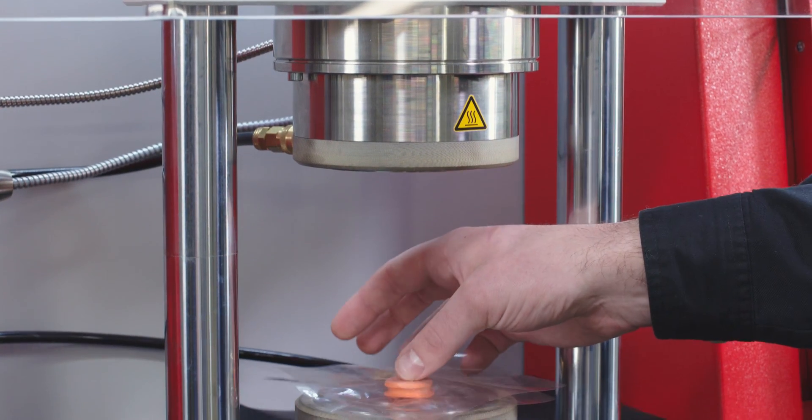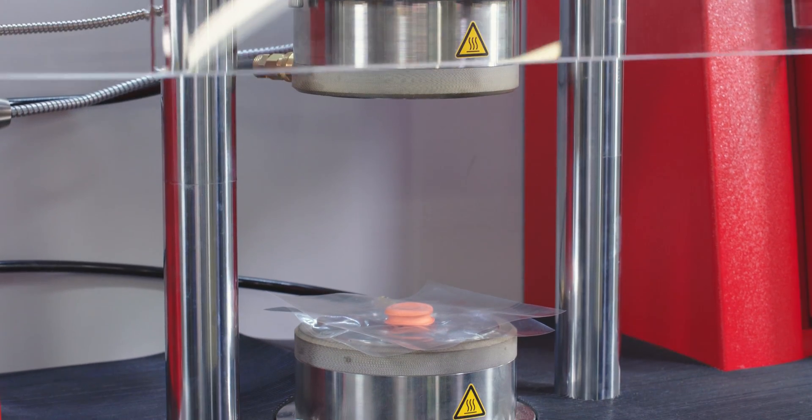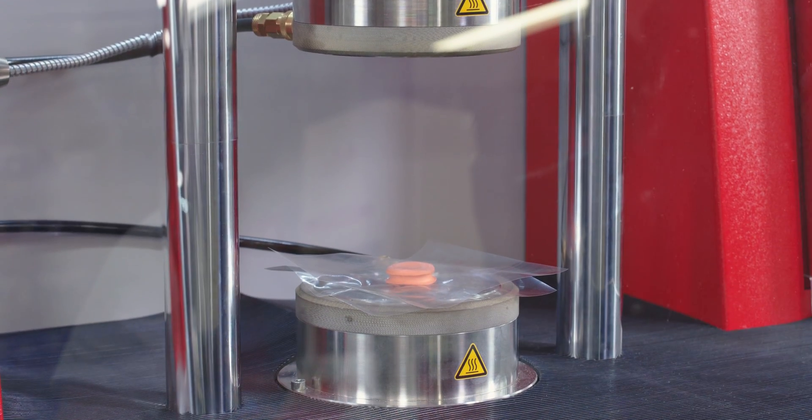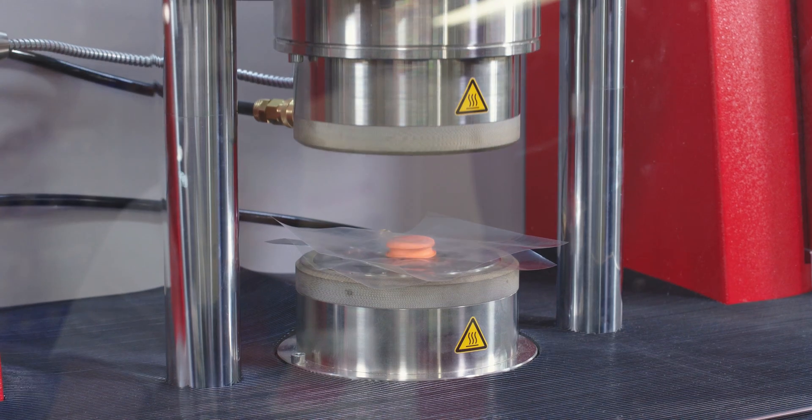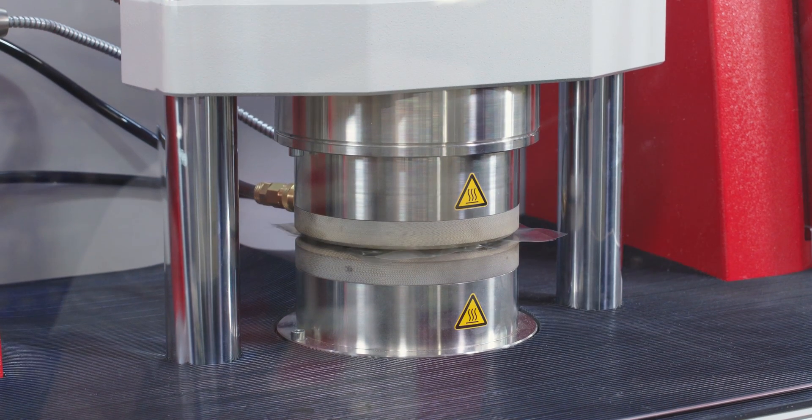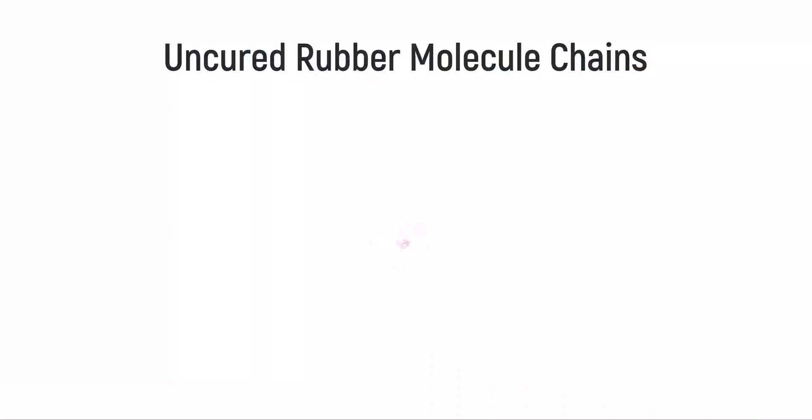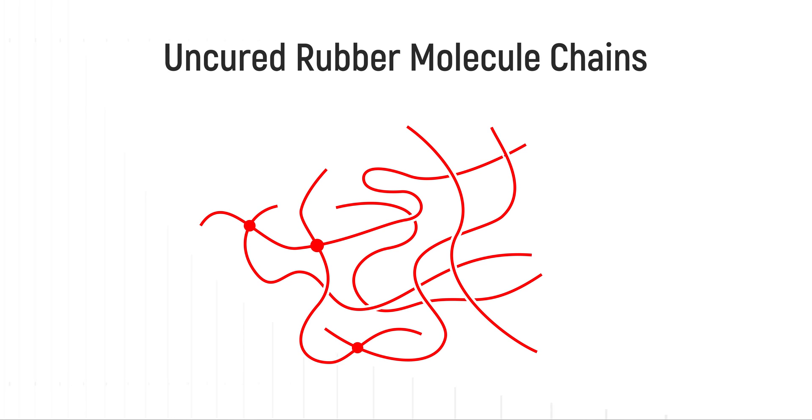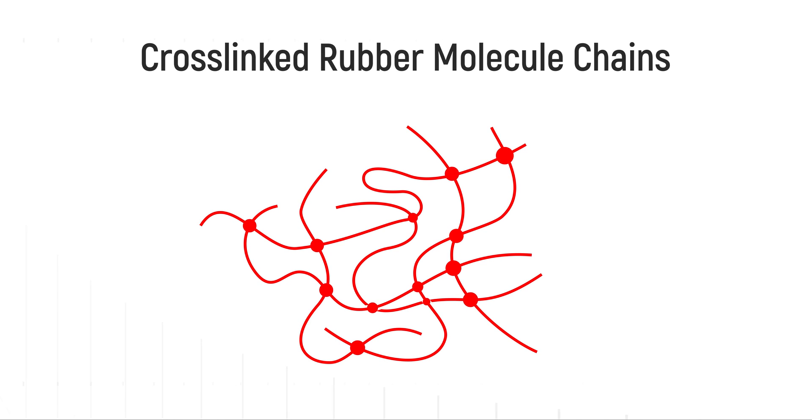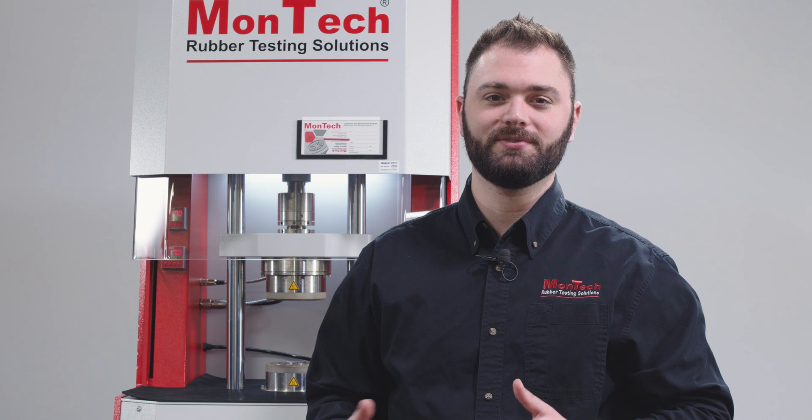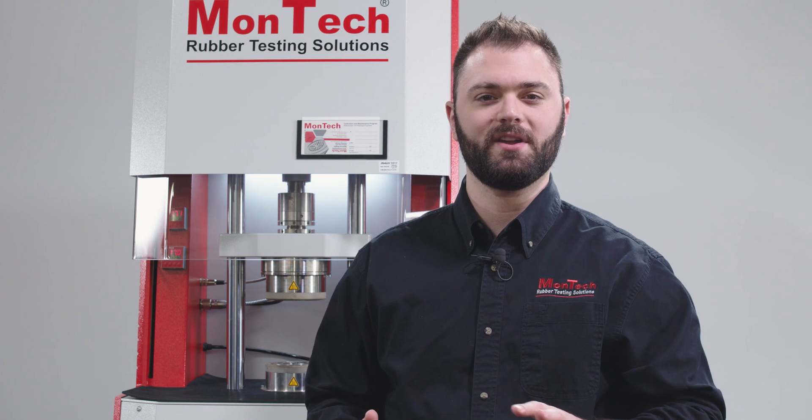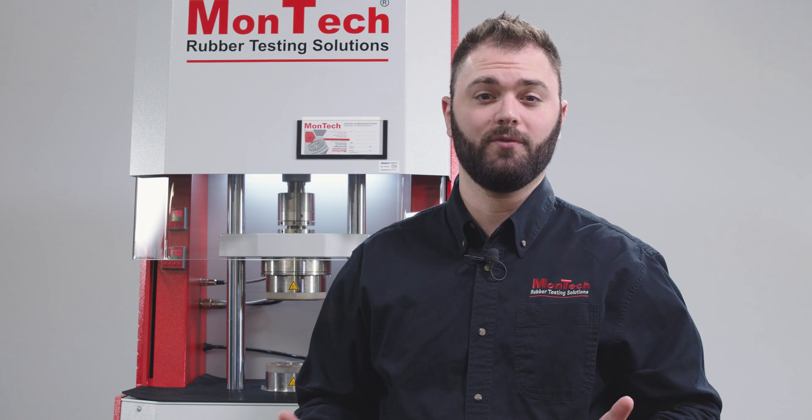MDR cure tests determine the cure characteristics of vulcanizable rubber compounds. During the test, an uncured sample is pressurized and heated in the sealed test chamber while being sheared by oscillation of the lower die. As the test progresses, rubber molecules within the sample form chemical bonds called cross-links, which bind the rubber molecules together. The cross-linked rubber molecules develop a net-like structure that reinforces the sample and increases its stiffness, also known as curing or vulcanization.